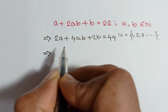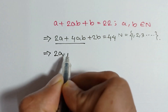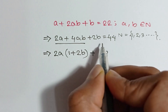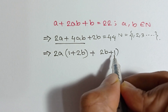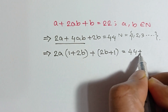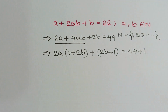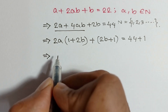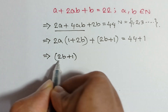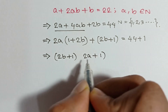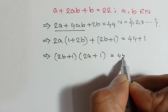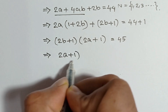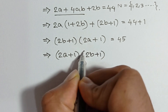Or, if we take common from the first two terms, we get 2a times (1 + 2b) plus 2b. If we add 1 to both sides, we get 2b + 1 is equal to 44 + 1. Now, (1 + 2b) and (2b + 1) are the same, so if we take out the common factor (2b + 1), it remains (2a + 1)(2b + 1) is equal to 45.